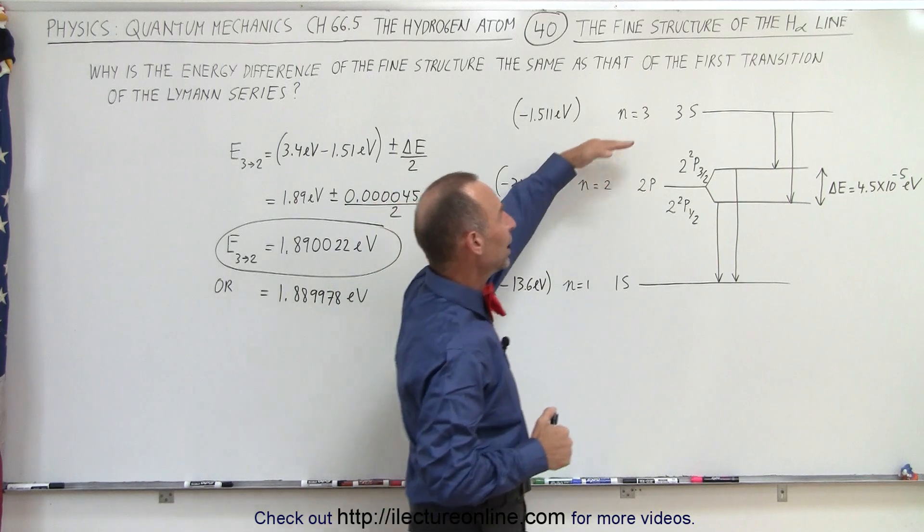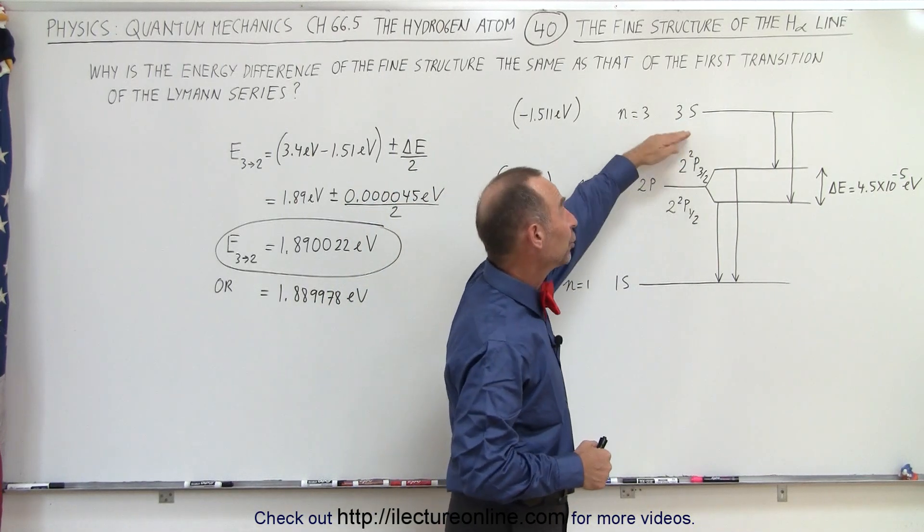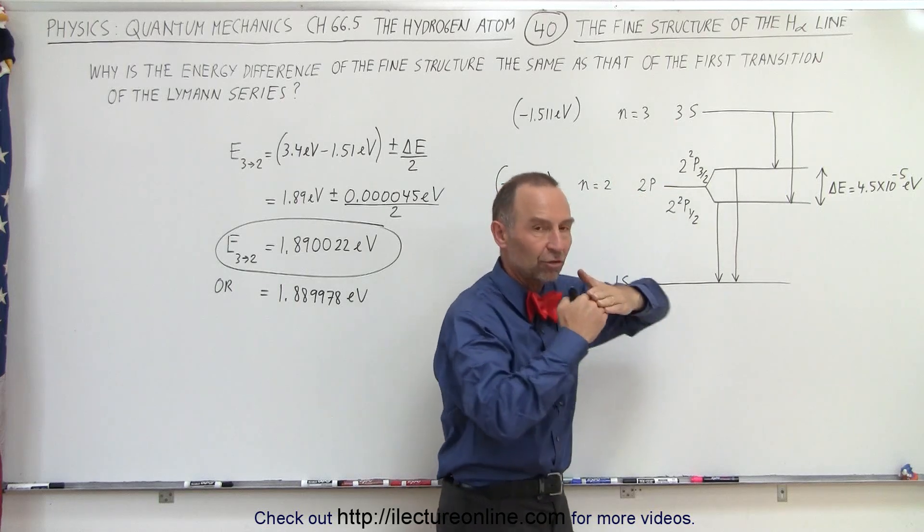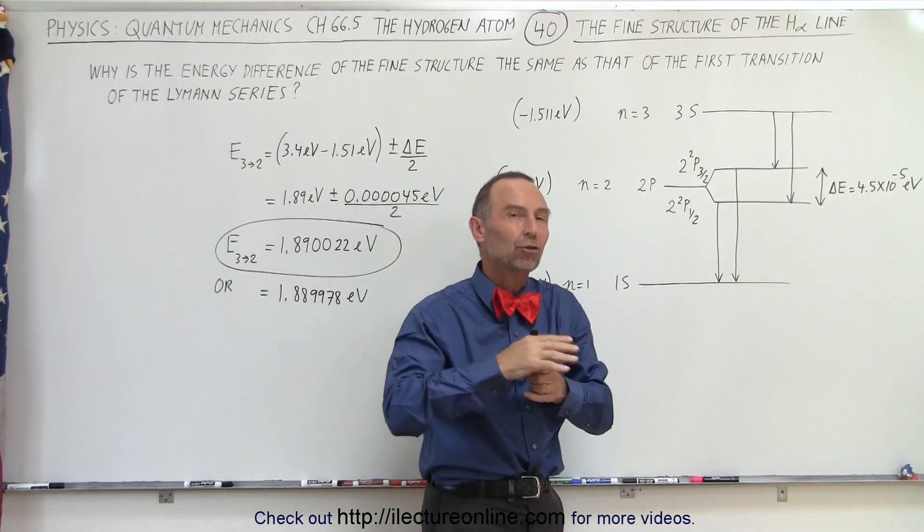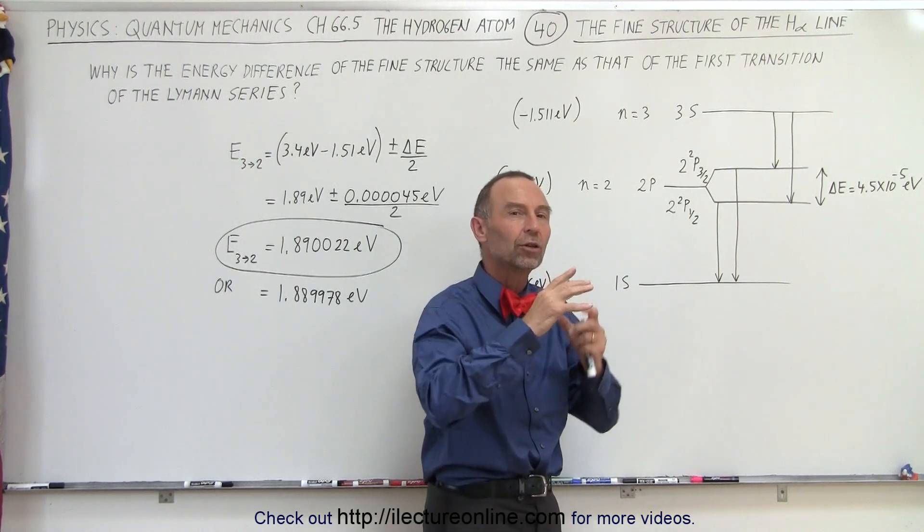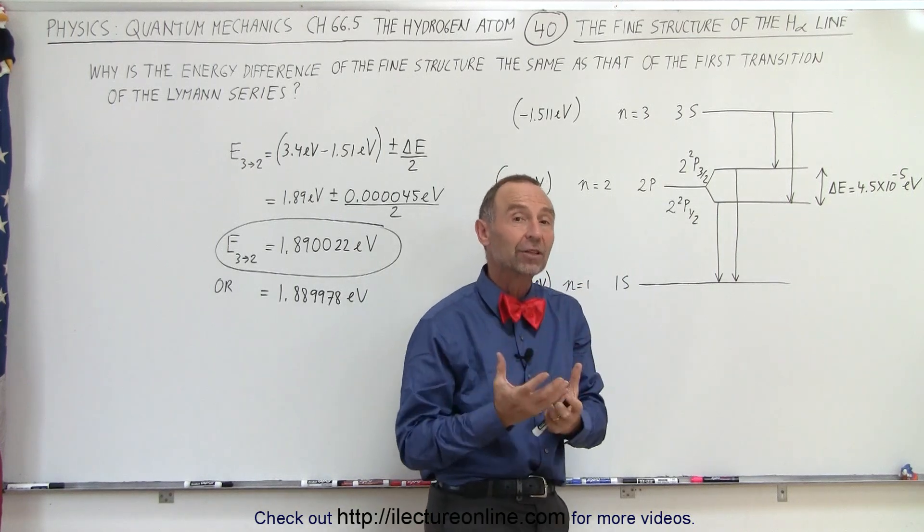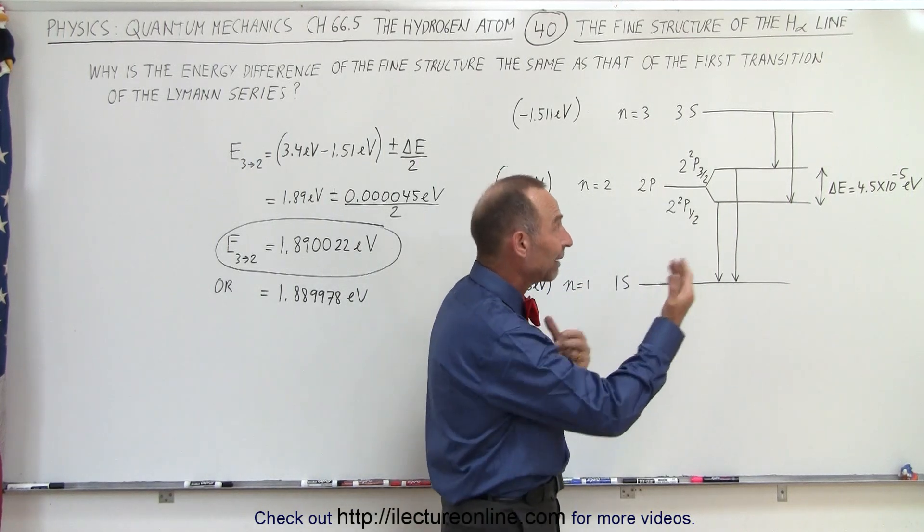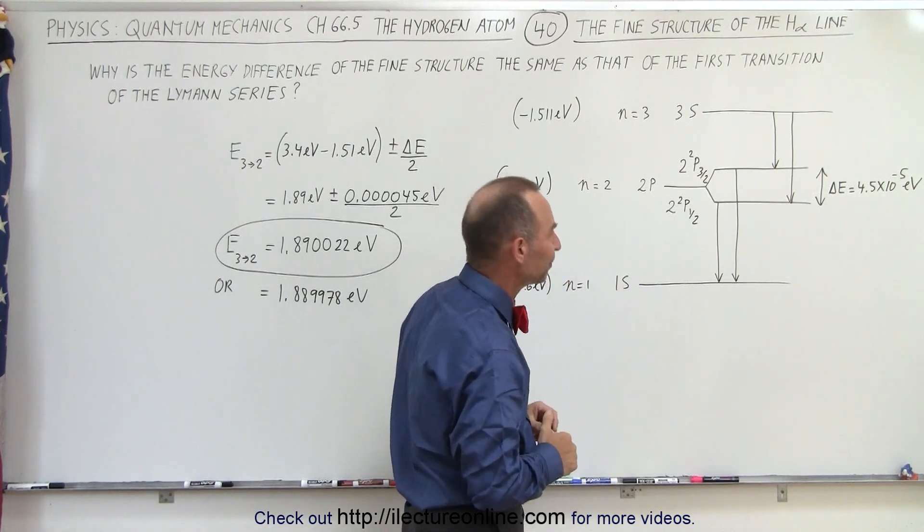When it jumps from the third energy level it typically comes from the 3s orbital and there you do not see that fine structure difference because it's an s orbital. In an s orbital there's an equal probability that the electron will travel around the nucleus in any given direction and because of that there's no magnetic field created and therefore we don't have that interaction between the spin direction of the electron and the non-existing magnetic field.